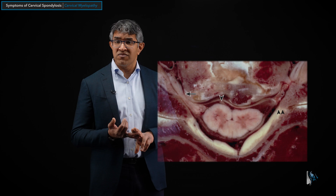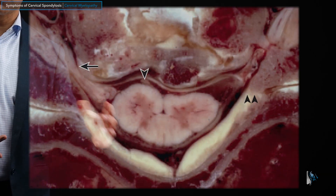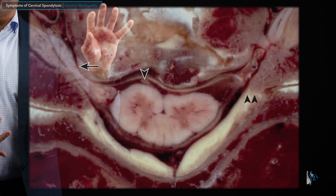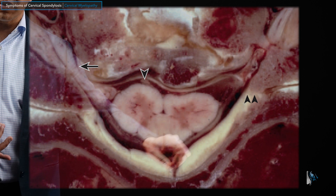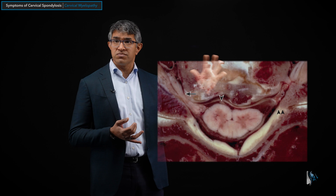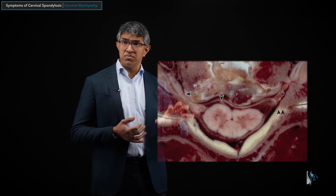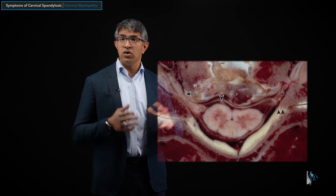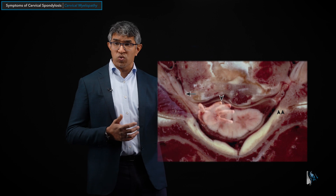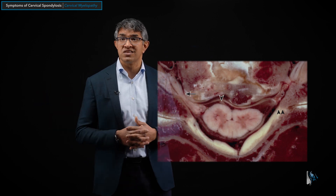There are two important things to emphasize. First, spinal cord compression can come from the front or from the back — it can be ventral or dorsal — and that has important implications for decision making and surgery. The other thing is that the spinal cord has room around it, so sometimes there can be narrowing or stenosis that's asymptomatic. As long as the spinal cord is working okay, they don't have myelopathy, so we don't necessarily care as much about encroachment alone.